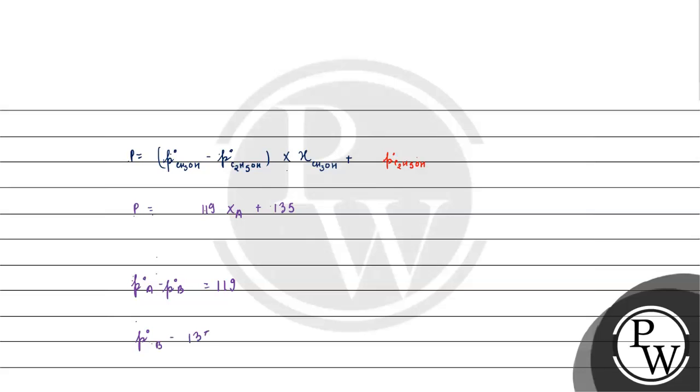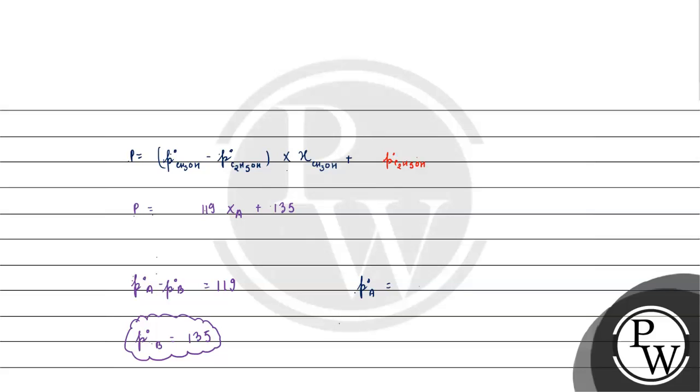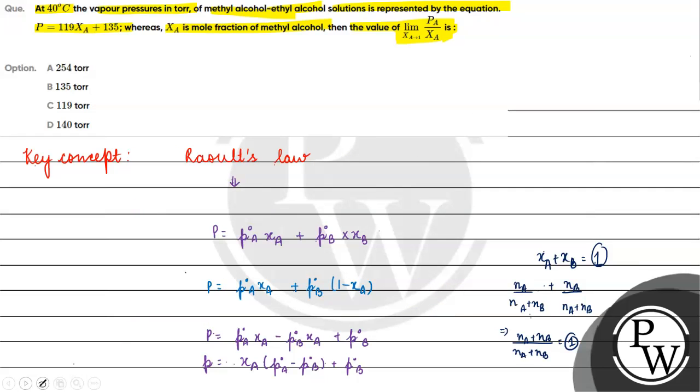We take methyl alcohol as component A. So P not of ethyl alcohol, which is P not B, will be 135. And P not A will be 119 plus P not B, which is 135, giving us 254 tor.